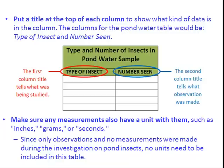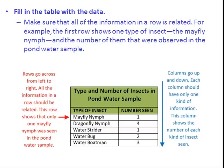Since only observations and no measurements were made during the investigation on pond insects, no units need to be included in this particular table. Then, you fill in the table with the data. Make sure all the information in a row is related. For example, the first row shows one type of insect, the mayfly nymph, and the number of them that were observed in the pond water sample.